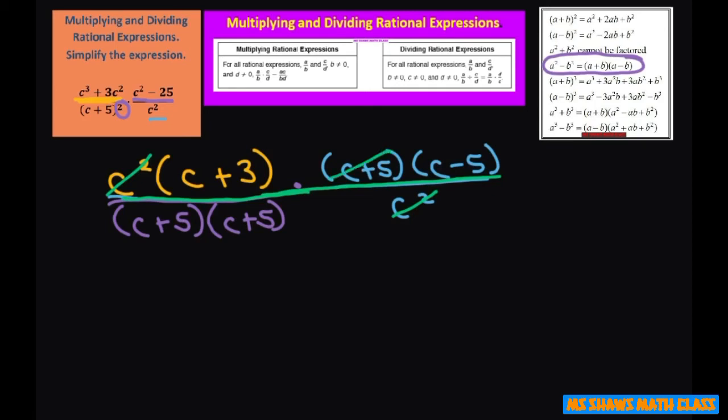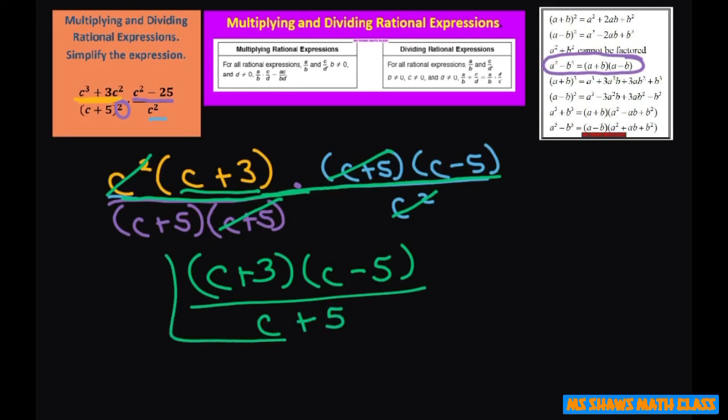These two cancel out. And what we're left with is C plus 3 times C minus 5 divided by C plus 5. And that's your final answer. Thank you. Have a nice day. Bye-bye.